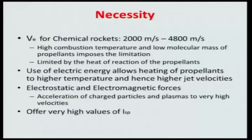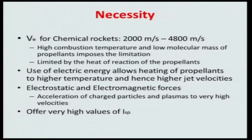The exit velocity attainable by a chemical rocket is limited to about 2000 to 4800 meters per second. What limits this? First, the high combustion temperature — if you go to very high temperature, the molecules start to dissociate and dissociation reactions are endothermic, so the available energy goes down. As temperature goes up, the available energy reduces and heat losses increase. Additionally, the low molecular mass of propellant also imposes a limitation. Every propellant combination has a specific heat of reaction — we cannot get more than that.